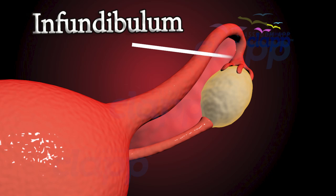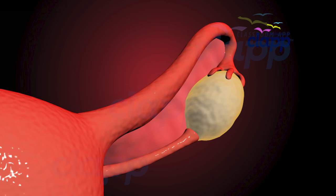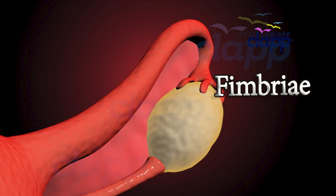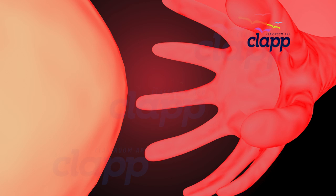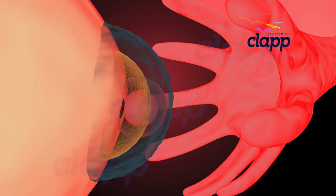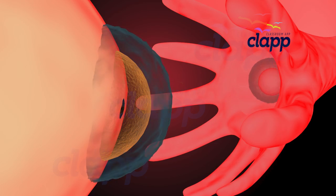Infundibulum is the funnel-shaped proximal part, and has finger-like projections called fimbriae at its margin. Fimbriae are very close to the ovaries and receive the egg released from the ovaries.